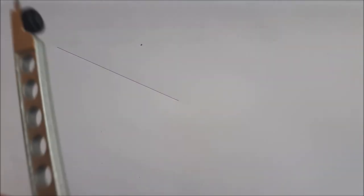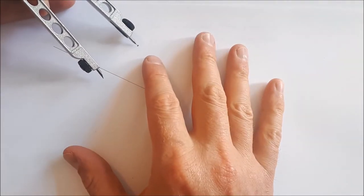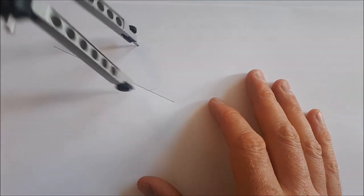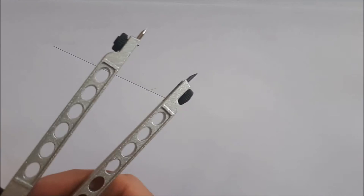I start by taking my compass. I put the point of my compass on the given point and I draw an arc on either side of the line. Then I take my compass and make it a little bit bigger.